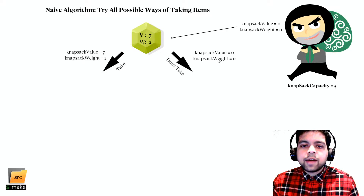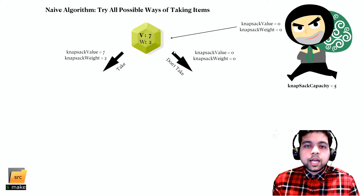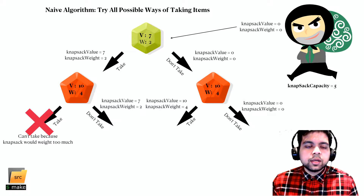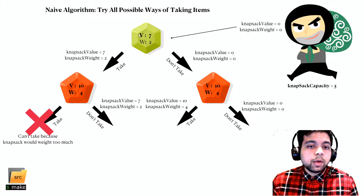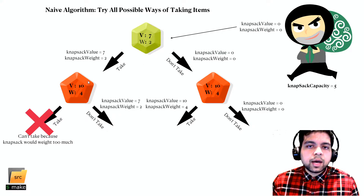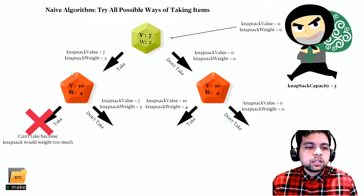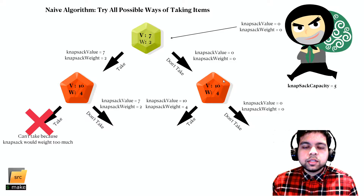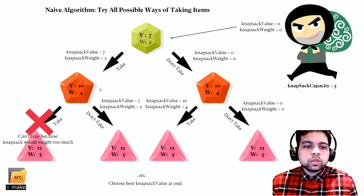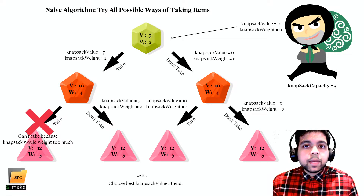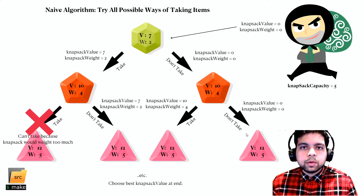If he doesn't take the gem, the knapsack value and weight stay at zero. He then sees the second gem and has more choices. Along one path, trying to take the second gem while already holding the first would be invalid — his knapsack can only hold 5 pounds but those two gems total 6 pounds. We keep going through combinations of taking and not taking gems, then take the best valid knapsack value as the final answer — in our case, 15.